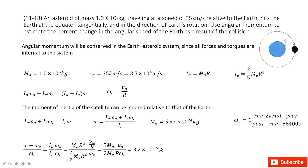Now we consider angular momentum is conserved, and we need to find the percentage change in angular speed of the Earth. In this system, the angular momentum must be conserved because all forces and torques are internal to the system. So no external force acts on this system.